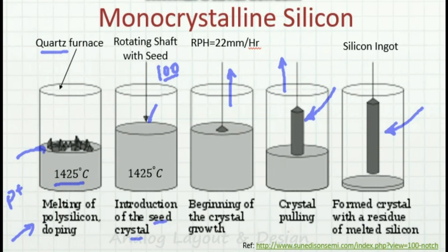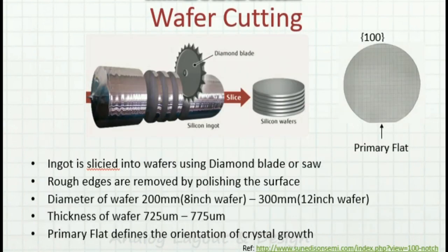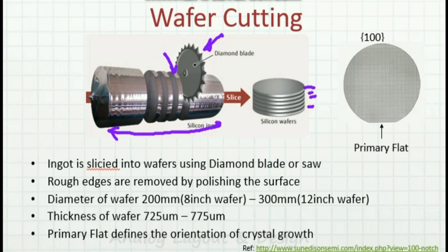This method of forming the silicon ingot is called the CZ process. Now, the ingot is taken and a diamond blade or saw is used to cut it into what are known as wafers. The rough edges are removed by polishing the surface. Currently the wafer sizes used are 8 inch or 12 inch, with a thickness of around 725 to 775 micrometers. The orientation is the 1,0,0 orientation, and the primary flat defines the orientation of the crystal.